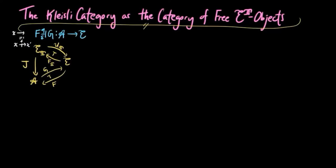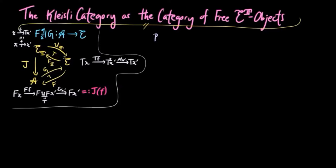Recall that j takes a morphism f to ff followed by the co-unit of fg on component x prime. We will now prove that j is full and faithful.